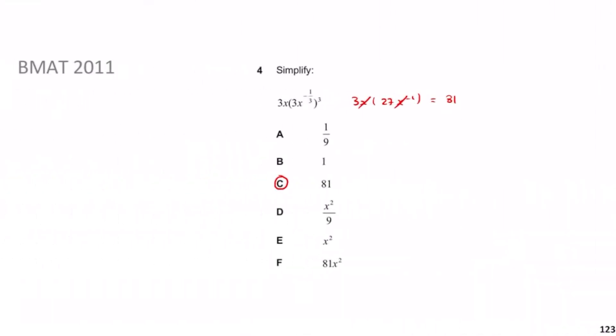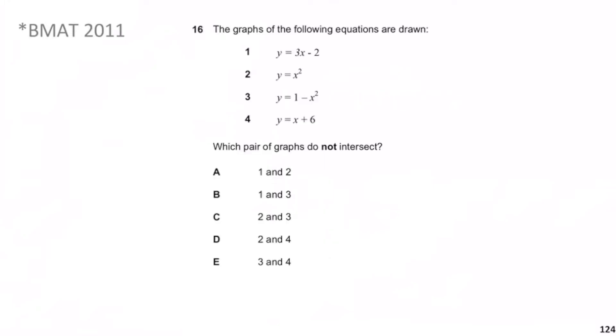Previously we looked at BMAT 2011 question 4 — hopefully much simpler than the previous questions. Now we move on to a question about which graphs do not intersect. For this type of question, I'd highly advise sketching the graphs. One alternative is simultaneous equations — if there's no solution, they don't intersect — but doing six pairs of simultaneous equations for one mark isn't worth it. The best approach is to sketch.